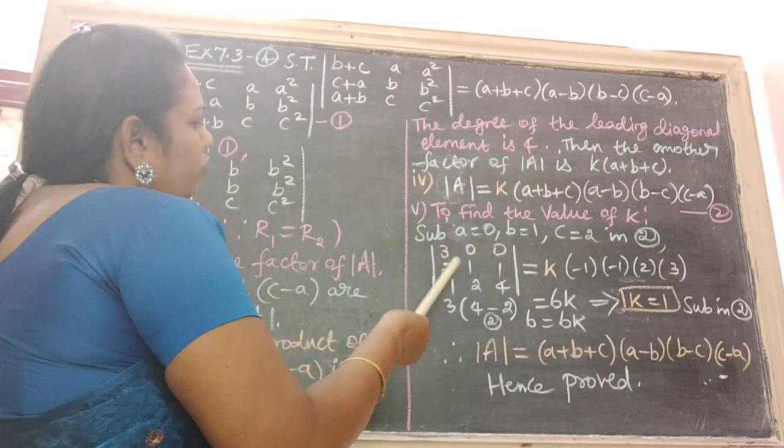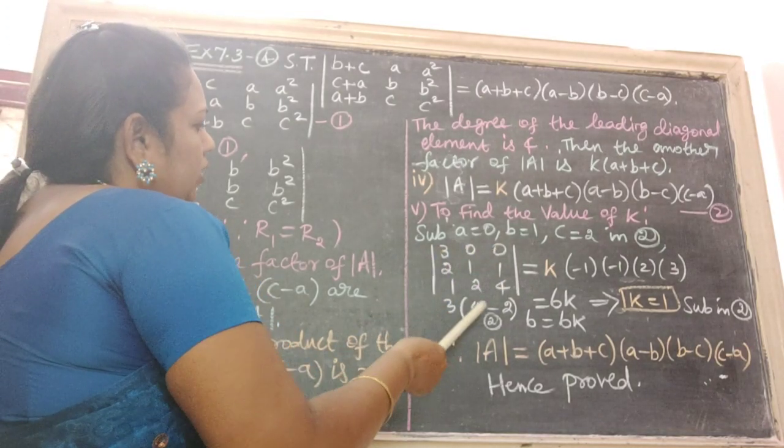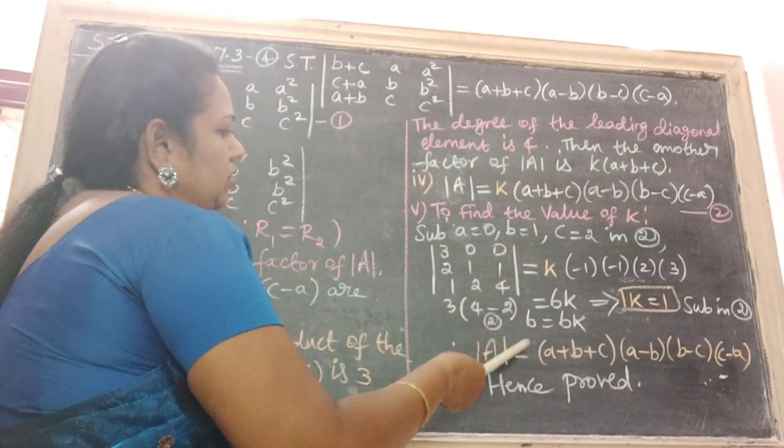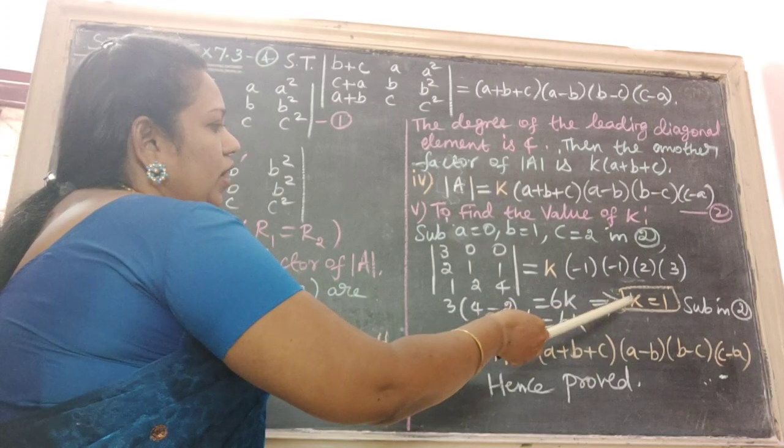Here there are two zeros. Therefore, first term 3 into 4 minus 2 which is 2. Here, substituting and simplifying, we get 6K. 6 cancels. Therefore, we get K equal to 1.